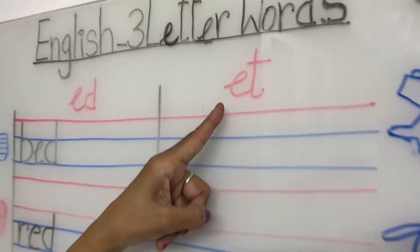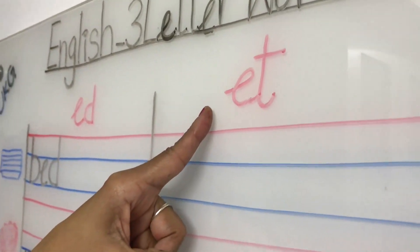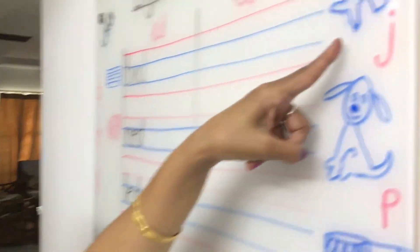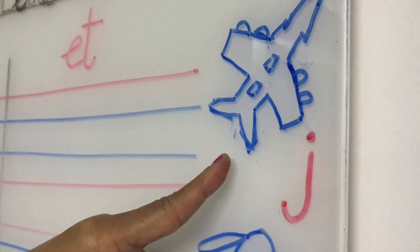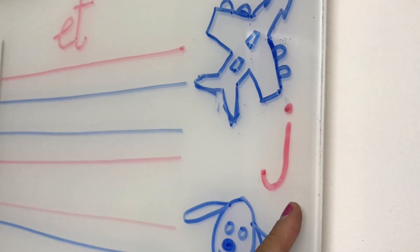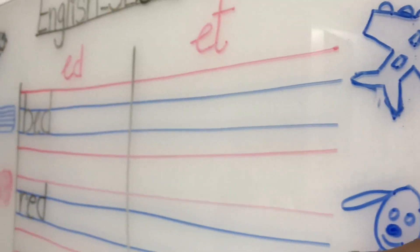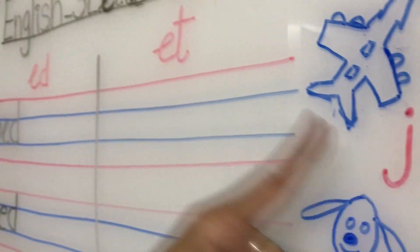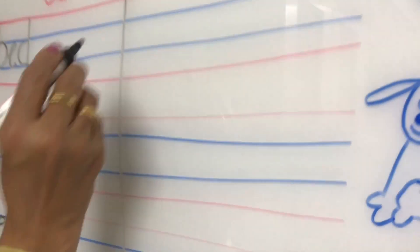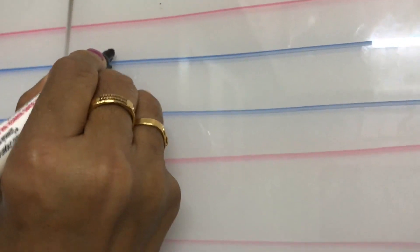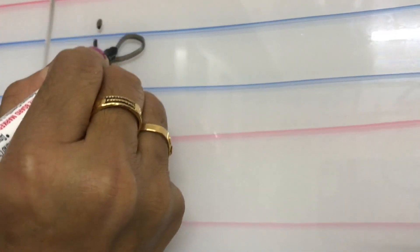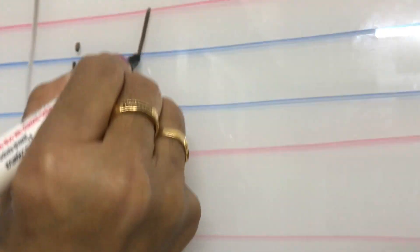This is ending with ET words. E... T... ET. What is this? This is jet — you know? This letter is J. When you join this J letter to ET it will become JET. J... E... T.